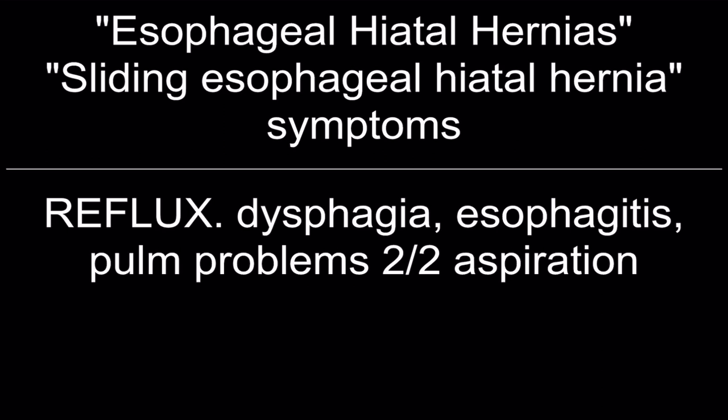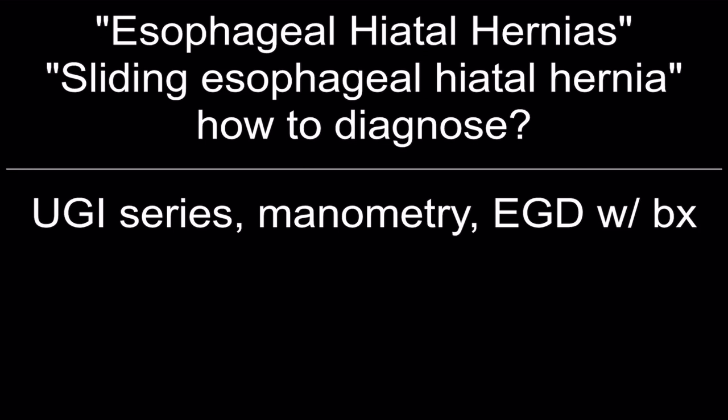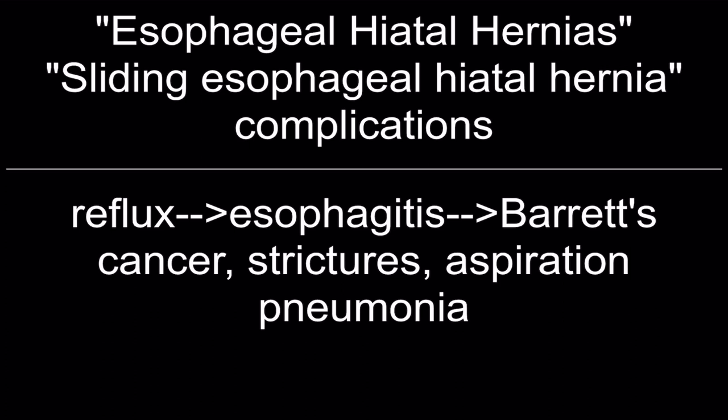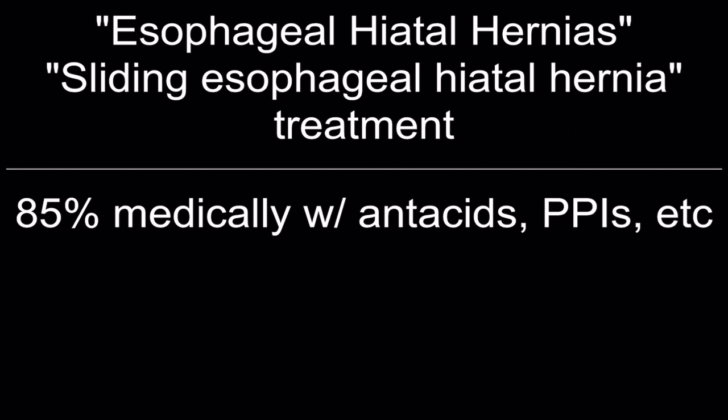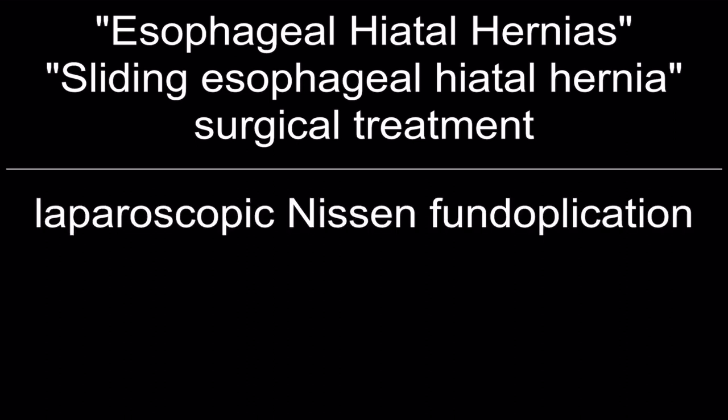Sliding esophageal hiatal hernia (Type 1): stomach and GE junction herniate into the thorax via the esophageal hiatus. Symptoms: reflux, dysphagia, esophagitis, pulmonary problems, aspiration. Diagnosis: upper GI series, manometry, EGD with biopsy. Complications: reflux esophagitis, Barrett's esophagus, cancer, strictures, aspiration pneumonia. Treatment: 85% medically with antacids and PPIs. Indications for surgery: persistent symptoms despite medical treatment. Surgical treatment: laparoscopic Nissen fundoplication.